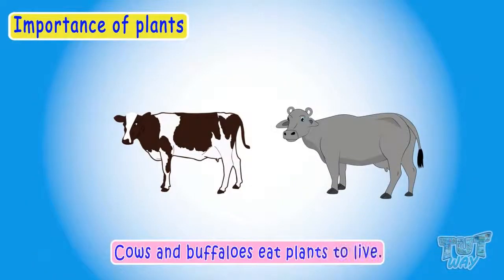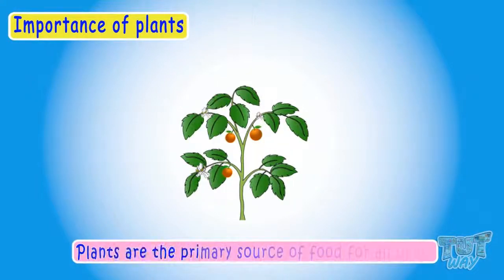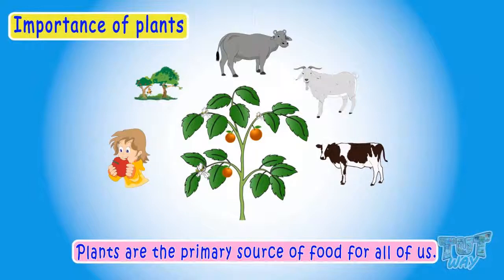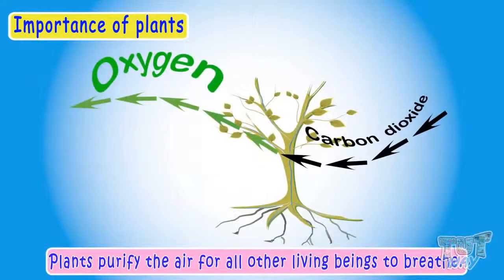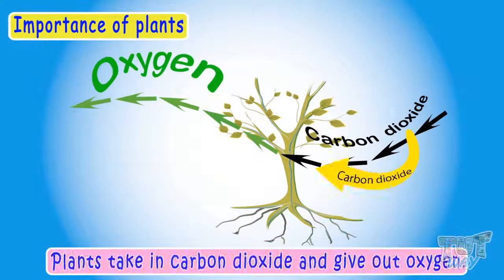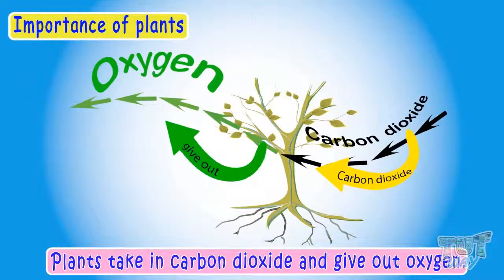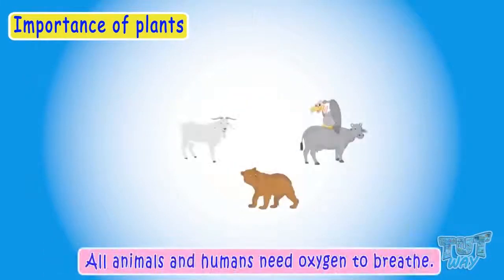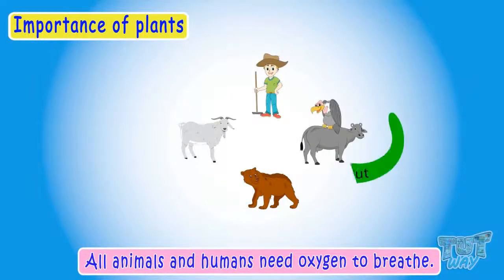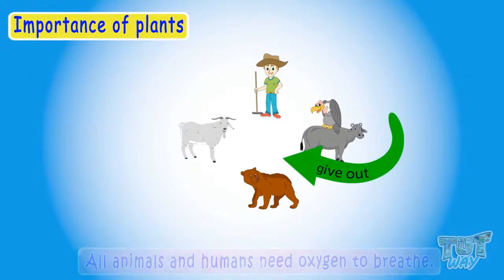Cows and buffaloes eat plants to live, then they give us milk that we drink. So plants are the primary source of food for all of us. Plants purify the air for all other living beings to breathe. Plants take carbon dioxide from the air and give oxygen into it, and all animals including humans need oxygen to breathe. So plants provide us oxygen to breathe.